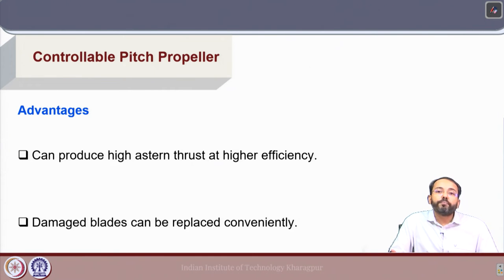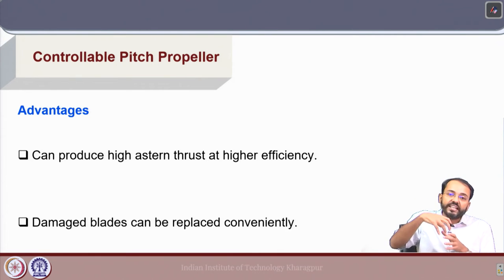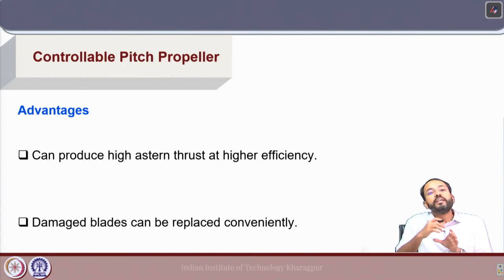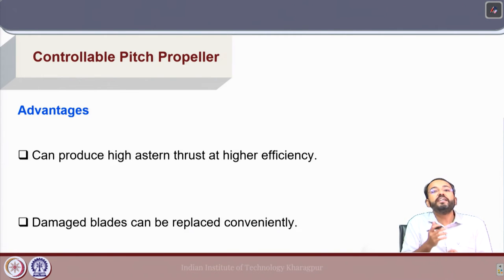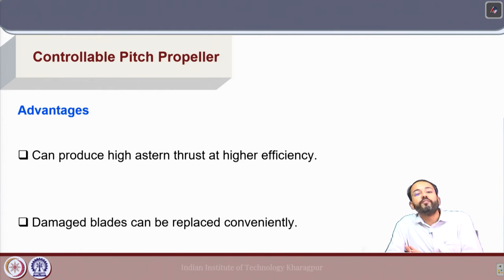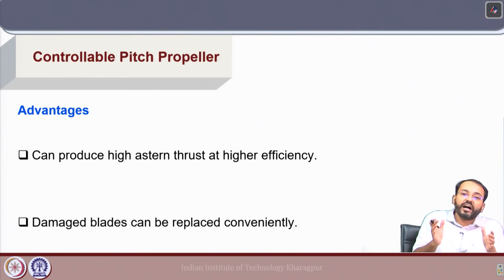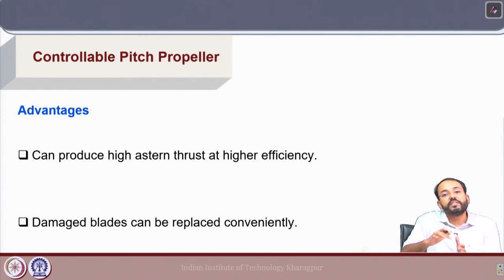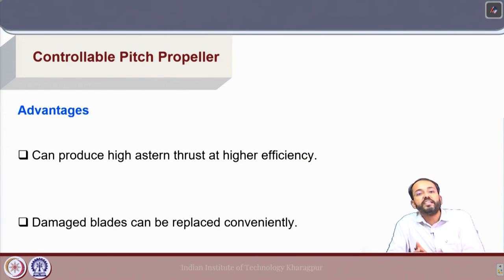For controllable pitch propellers, because each blade is fitted on the hub on a separate structure that can be rotated, each blade can be individually replaced. If there is damage in any propeller blade, it can be replaced more conveniently compared to a fixed pitch propeller where all blades are fixed to the hub — in that case, changing one blade is not possible and the entire propeller needs to be changed.